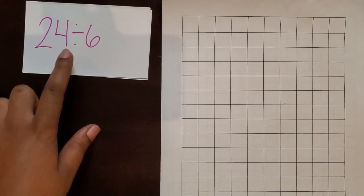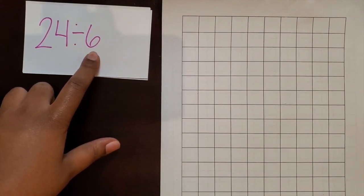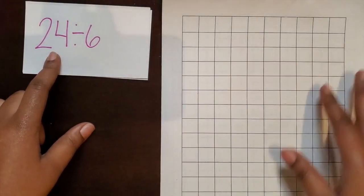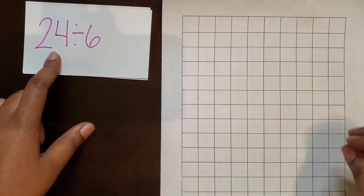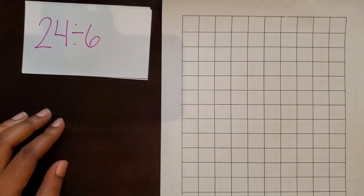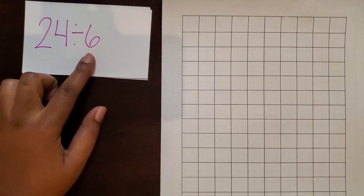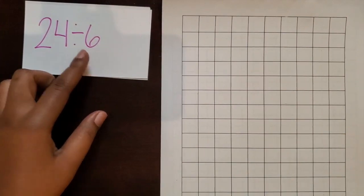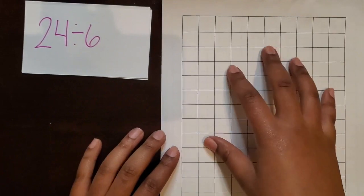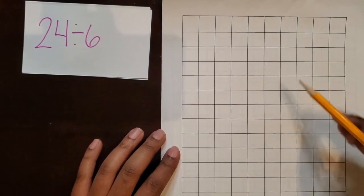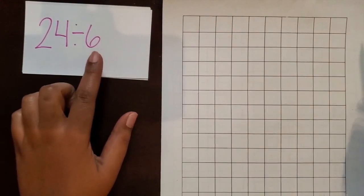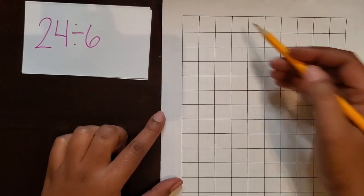We have 24 divided by 6. Since 24 is the total, it's going to represent the total area, the total amount of square units in our rectangle that we're going to draw. The 6 can represent the width or it could represent the length. For this example, we're going to have it represent the width. So I know on my grid that I'm going to have a rectangle with a total of 24 square units. The width of that rectangle is going to be 6 square units.